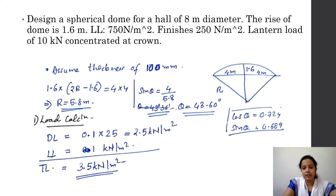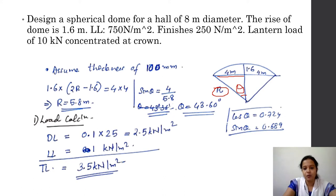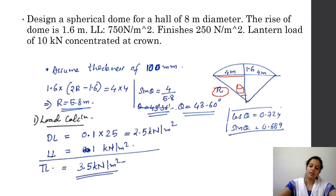We have the half-diameter as 4 meters and the radius R = 5.8 meters. The angle theta is found from sin θ = 4/R = 4/5.8, which gives θ = 43.6 degrees.